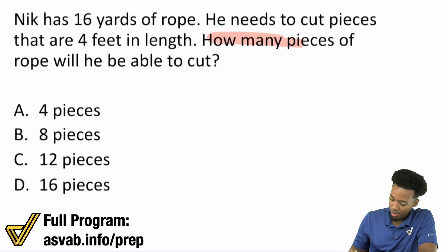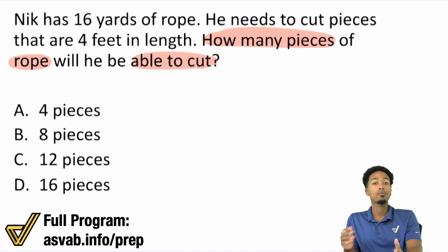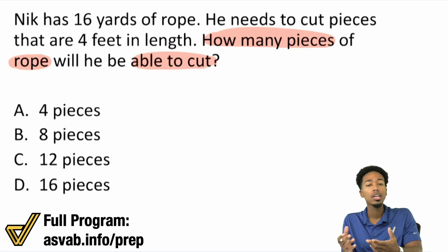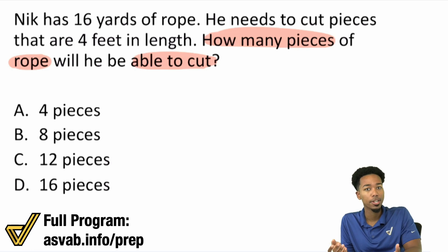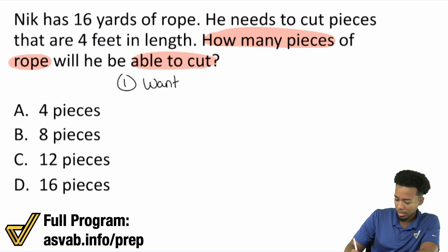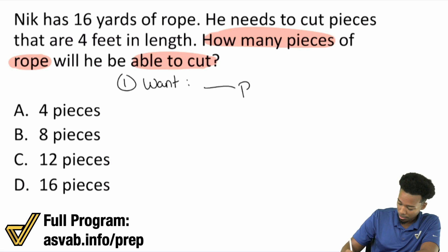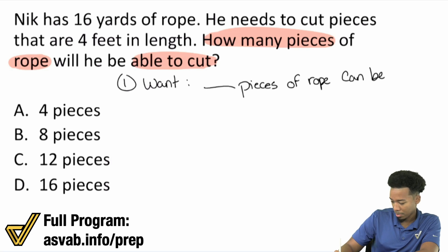So here we see it says: how many pieces of rope will he be able to cut? I can already tell from the question sentence that we're dealing with some rope that we're cutting and we want to know how many pieces of rope we can cut. So I'm going to start off right there — the number of pieces of rope. So blank pieces of rope can be cut.